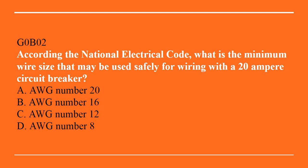G0B02: According to the National Electrical Code, what is the minimum wire size that may be used safely for wiring with a 10-ampere circuit breaker? A, AWG number 20. B, AWG number 16. C, AWG number 12. Or D, AWG number 8. Correct answer is C — AWG number 12.